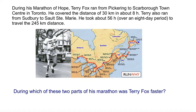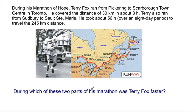Great subject matter here — Terry Fox. During his Marathon of Hope, Terry Fox ran from Pickering to Scarborough Town Centre in Toronto, covering a distance of 30km in about 8 hours. He also ran from Sudbury to Sault Ste. Marie, taking 56 hours over an 8-day period to travel 245km. The question is: during which of these two parts of his marathon was Terry Fox faster?